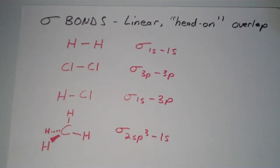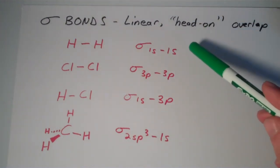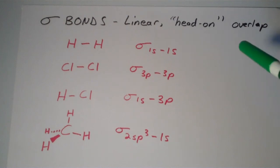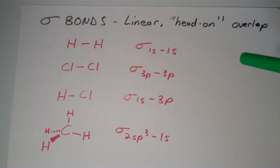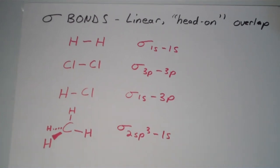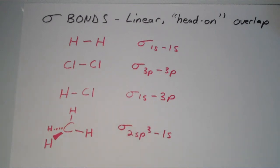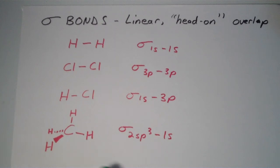So the bond between the two hydrogens in an H2 molecule, that's a sigma bond between s orbitals. The bond between two chlorine atoms in a Cl2 molecule, that's a sigma bond between p orbitals. Here we have a heteronuclear sigma bond between an s orbital and a p orbital. And then the carbon hydrogen bonds in methane are also sigma bonds. That would be a sigma bond between an sp³ hybrid and a 1s orbital.